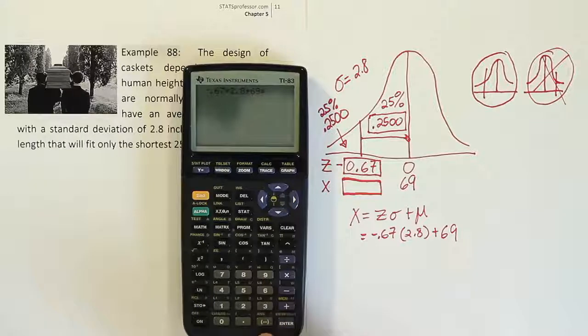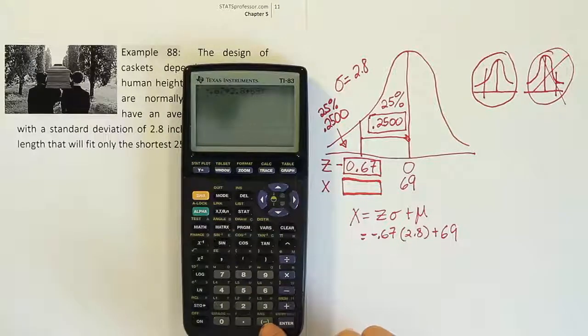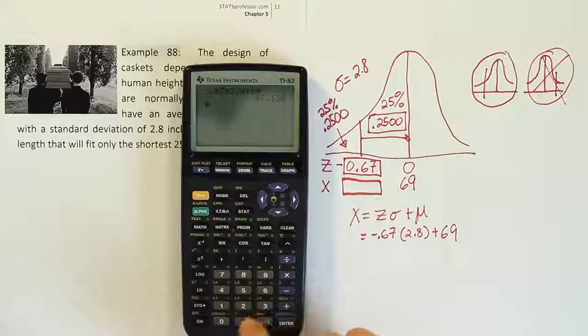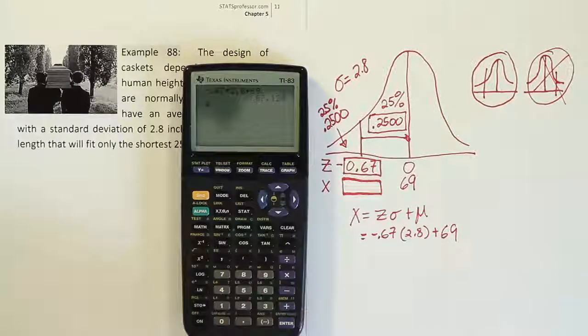Remember, if you're doing it in this way, you have to use a negative key on your calculator, the minus key. Don't use the subtract key there, right? Or you could just do 69 minus .67 times 2.8. That will work as well.